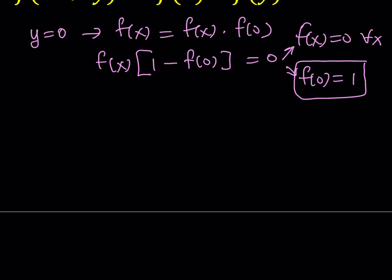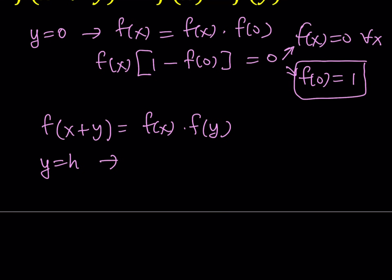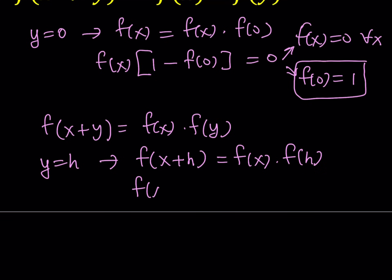Let me rewrite the equation one more time: f of x plus y equals f of x times f of y. Now I'm going to replace y with h — you'll see in a little bit why I do that. Remember, I mentioned I'll be using differentiation. So f of x plus h can be written as f of x times f of h. Now I'd like to subtract f of x from both sides — my goal is to get to the difference quotient.